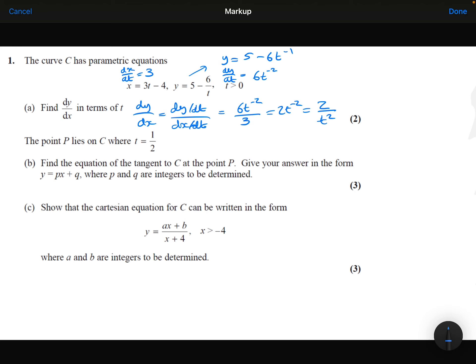So let's first work out the gradient at point P. We've just worked out the gradient function, so all we need to do now is substitute the value of t in at that point, which is one-half.